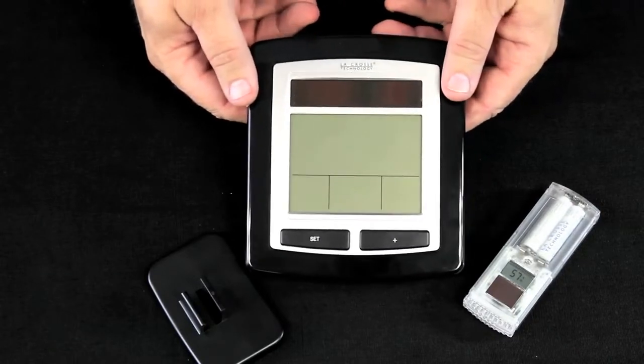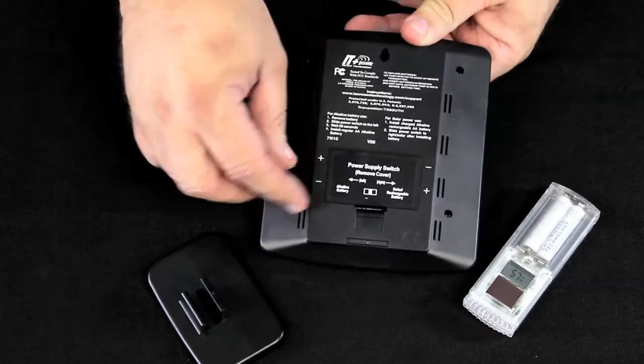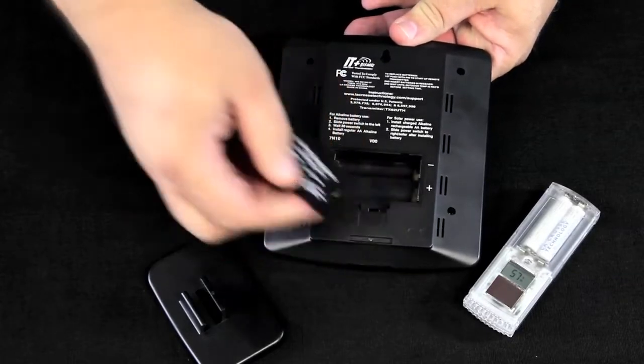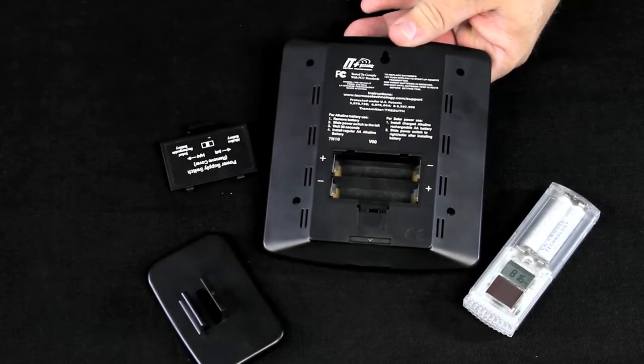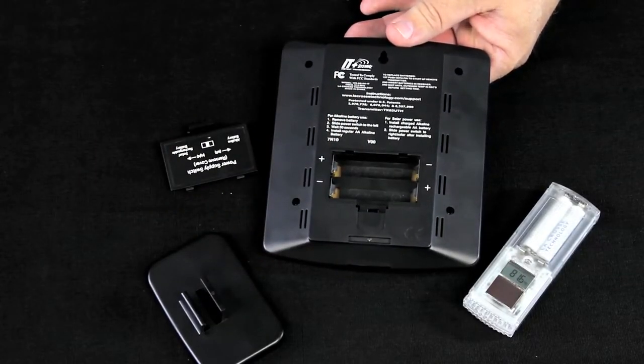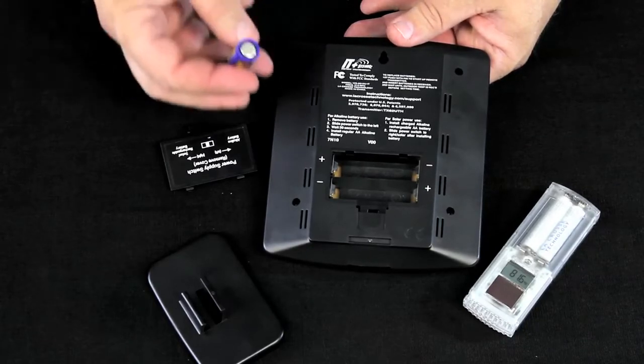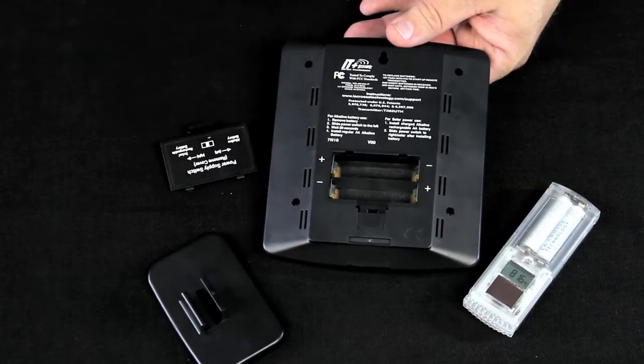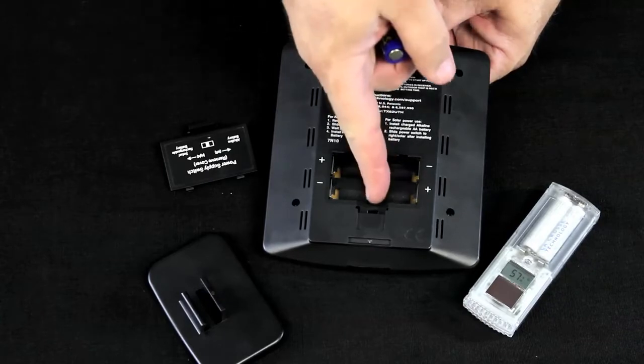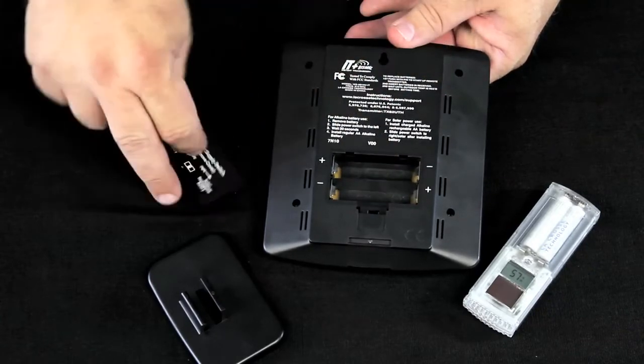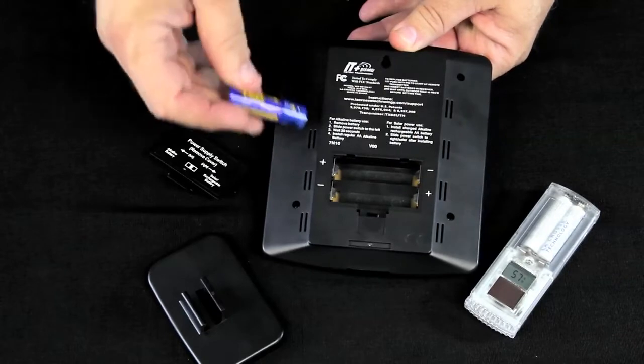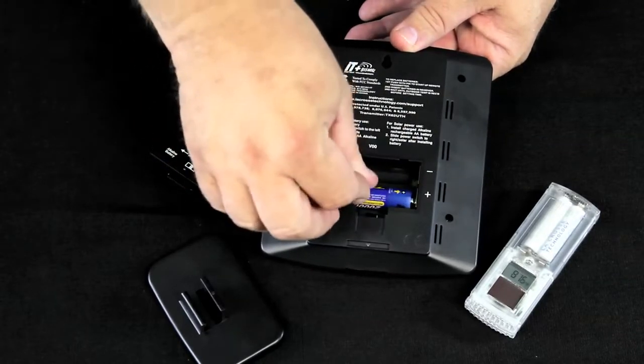we start up the indoor display unit. Very simple process. We open the back. If we're using an alkaline battery, we simply put that battery in. We're going to slide this power switch over to the left, and we're going to put our batteries into the station.